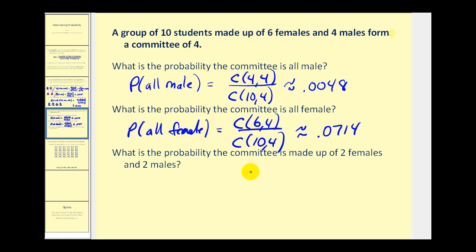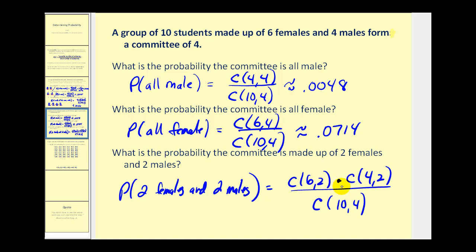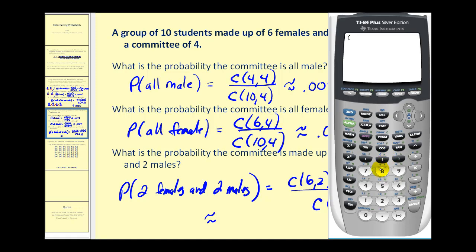What is the probability the committee is made up of two females and two males? The denominator is still 10 choose 4. The number of ways of selecting two females from six is 6 choose 2, times the number of ways to select two males from four, which is 4 choose 2. So the numerator is 6 choose 2 times 4 choose 2, divided by 10 choose 4. The result is approximately 0.4286.